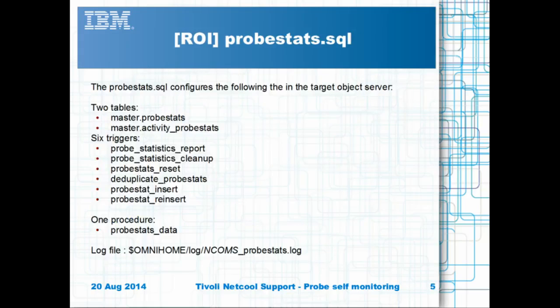The target object server used by the probe requires the probestats.sql file to be run against it. For the multi-tier system, the targets are the collection layer object servers. The SQL adds two new tables used to hold the statistics data and six new triggers used to collate and log the data. The default log name is shown here, where ncoms is the object server name.